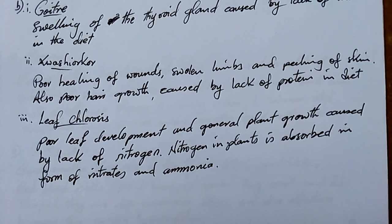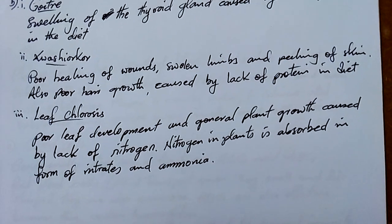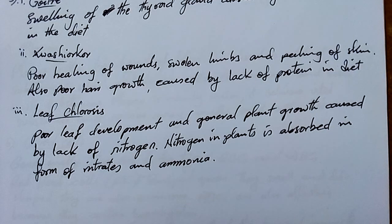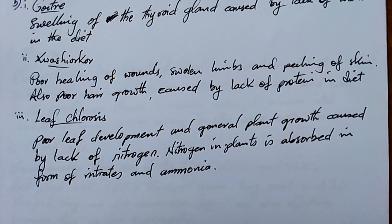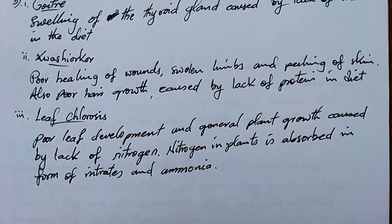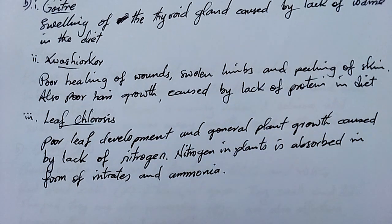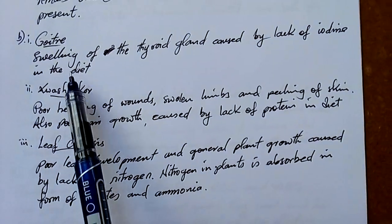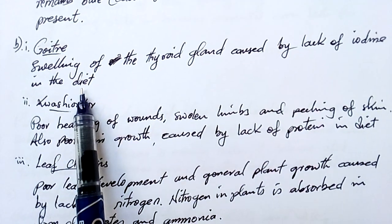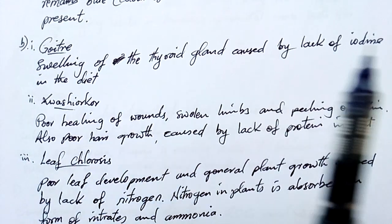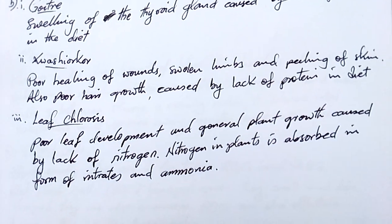Kwashiorkor: poor healing of wounds, swollen limbs, and peeling of skin, as well as poor hair growth — caused by lack of protein in the diet. It's a condition caused by lack of protein, and these are the symptoms. How do you solve goiter? By taking diets fortified with iodine. For kwashiorkor, increase protein in the diet.